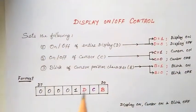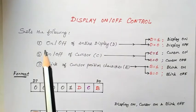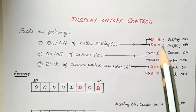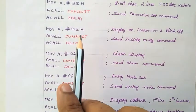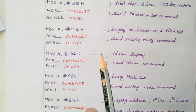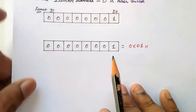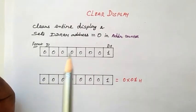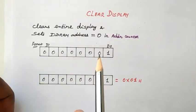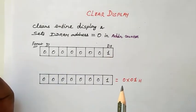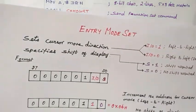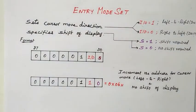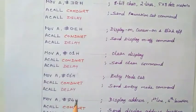Next is the display on/off control code. Here we set whether the entire display should be on or off, whether the cursor should be on or off, and whether cursor blinking should be on or off. Substituting these values gives us 0x0E. For clear display, the format has a fixed value — D7 to D1 are 0, and D0 is 1 — giving hexadecimal 0x01. For entry mode set, we configure whether text enters right to left or left to right, giving us 0x06.